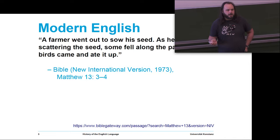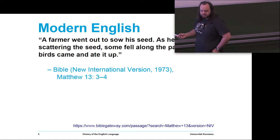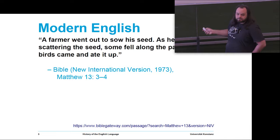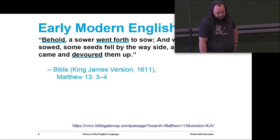Here we've got a passage of modern English. It's from the Bible, because the Bible goes back quite a long way. Here we have: a farmer went out to sow his seed. As he was scattering the seed, some fell along the path, and the birds came and ate it up. This is from the New International Version — date is important here — 1973, more or less contemporary.